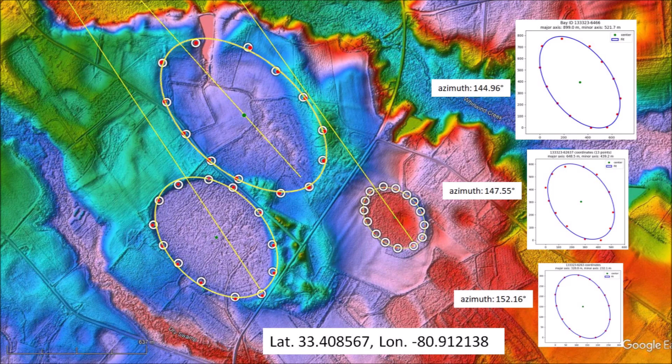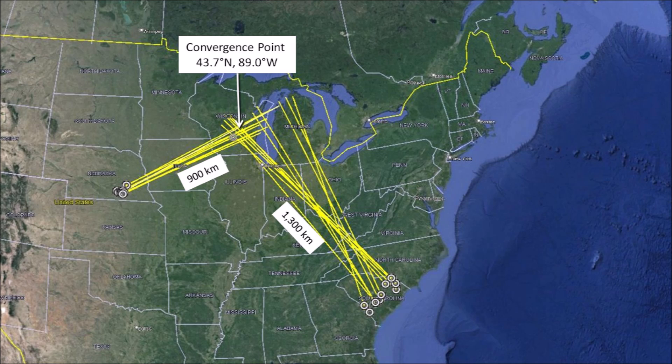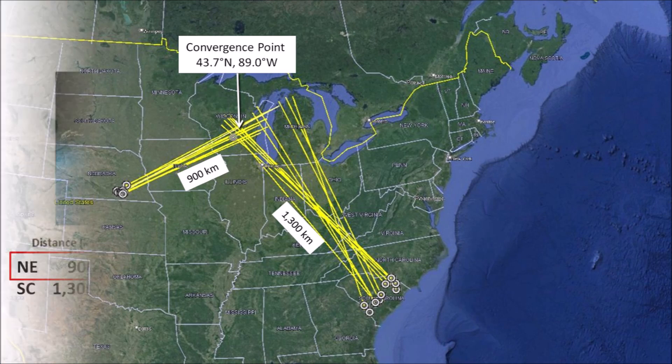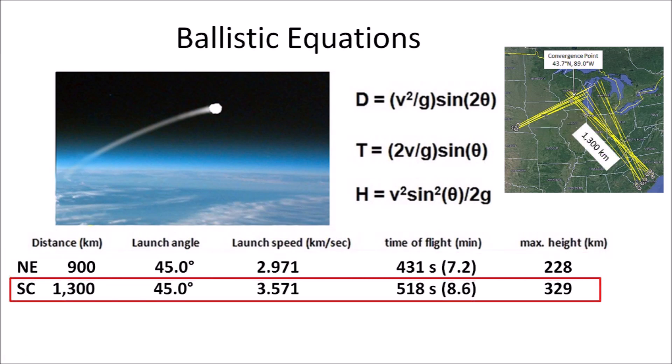This image shows the extensions of the azimuths toward the Great Lakes region. The lines from the basins in Nebraska and South Carolina converge in Wisconsin at a latitude of approximately 43.7 degrees north and longitude 89.0 degrees west, but a few lines are redirected toward Michigan. The basins in Nebraska are located approximately 900 km from the convergence point in Wisconsin; ballistic trajectories for projectiles launched at 45 degrees would have had flight times of about 7.2 minutes. The basins in South Carolina are located 1,300 km from the convergence point, and those ballistic flights would have taken about 8.6 minutes.